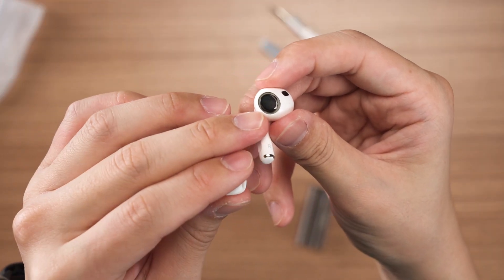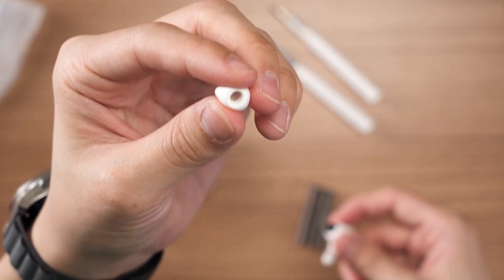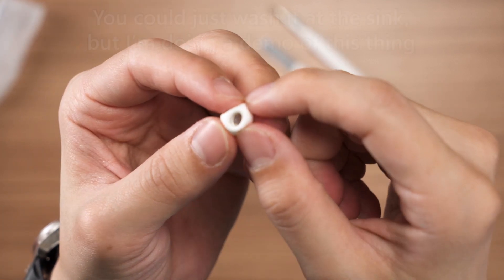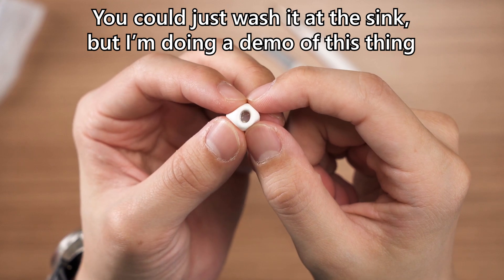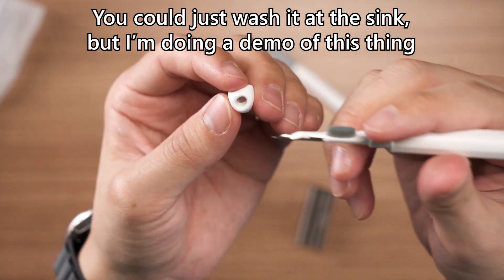For the case of the AirPods, you can see there's a speaker grill here. This is totally clean. But the other trap for all the earwax is on the ear tip itself. You can see it's all there. So what I'm going to do, take this thing.